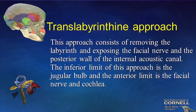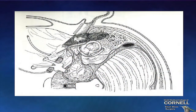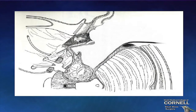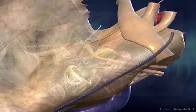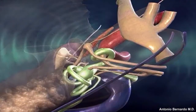The trans-labyrinthine approach consists of removing the labyrinth and exposing the facial nerve. The first step is superficial mastoidectomy, the second step is removal of the labyrinthine block, and finally approach to the cerebellopontine angle.